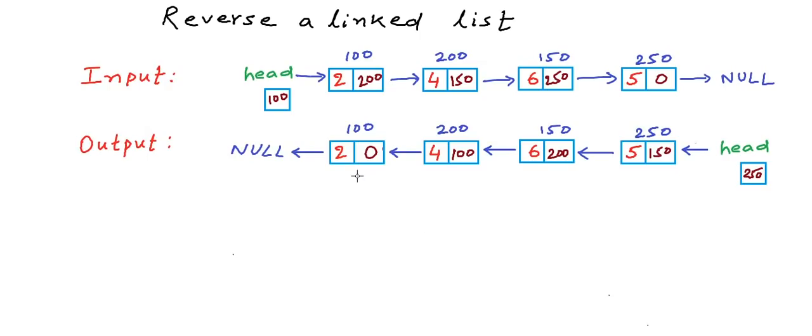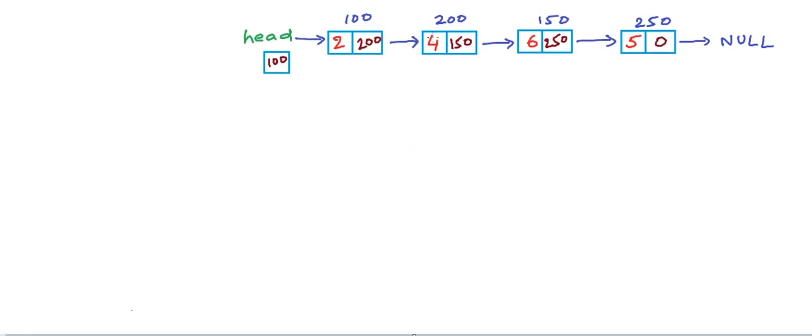There are two approaches to solve this problem. One is an iterative approach where we will be using a loop, traversing through the list, and at each step reverting one of the links. Another solution is using recursion. In this lesson, we will try to understand the iterative solution. The iterative solution is relatively easier to understand — what we can do is traverse the whole list, and as we go to each node, adjust the link part of that node to make it point to the previous node instead of the next node.